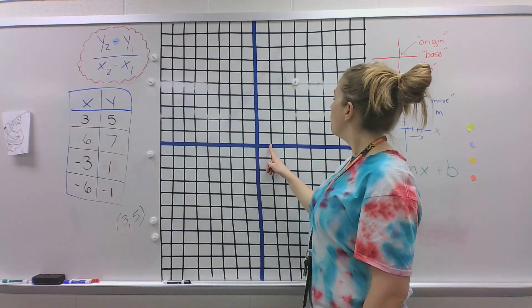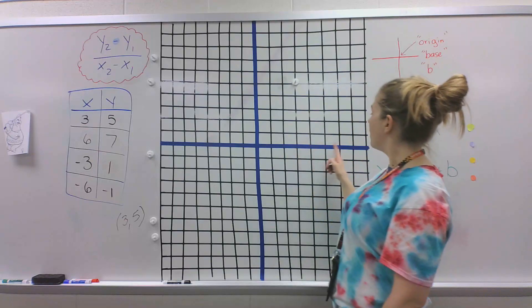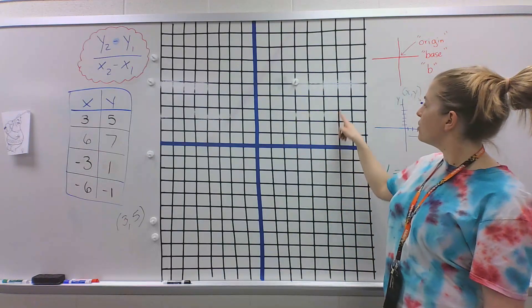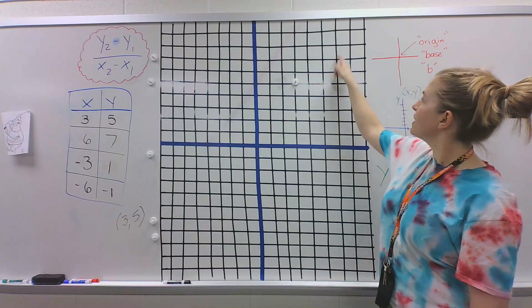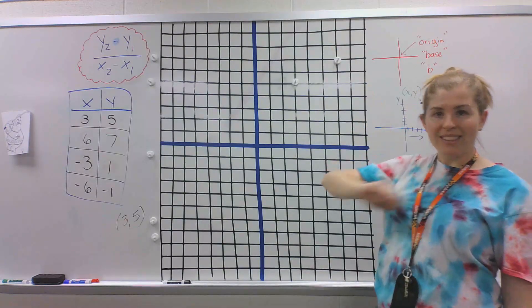6 comma 7. 1, 2, 3, 4, 5, 6. 6 for x. 1, 2, 3, 4, 5, 6, 7. There's 6 comma 7.